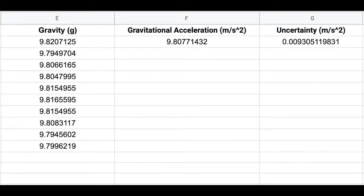We have now determined the gravitational constant 9.8077 meters per second squared and applied an uncertainty of 0.009305 by means of standard deviation of the 10 determined gravity values.